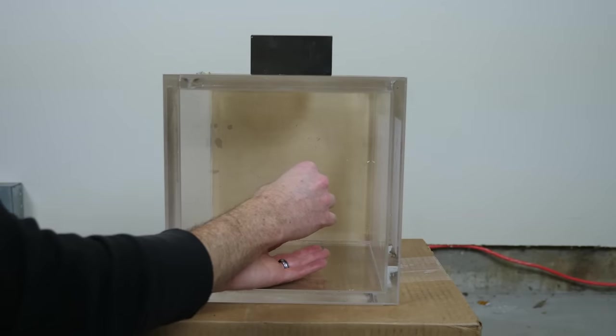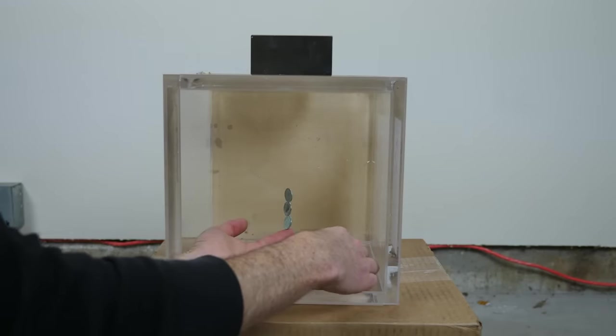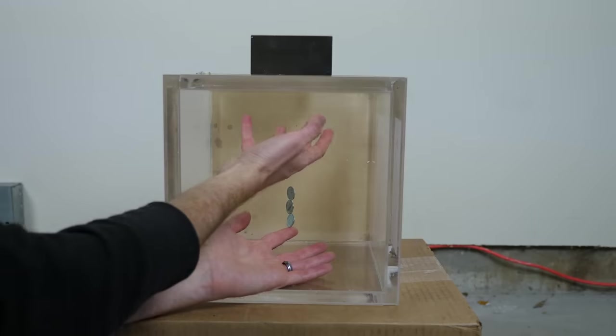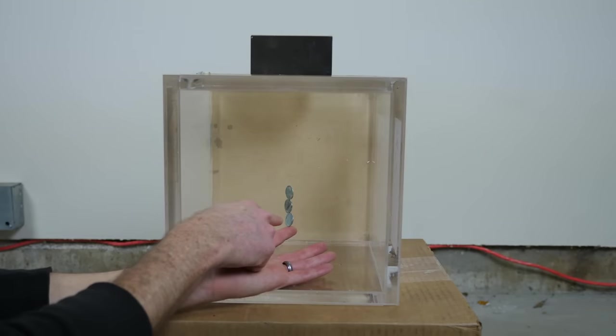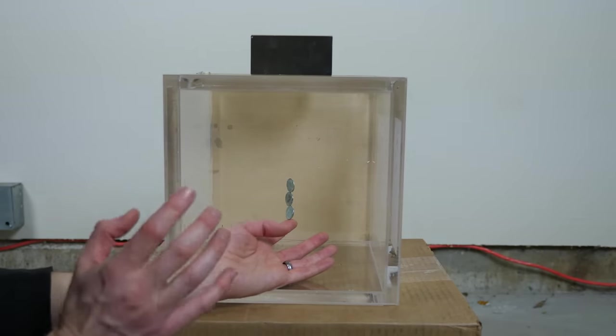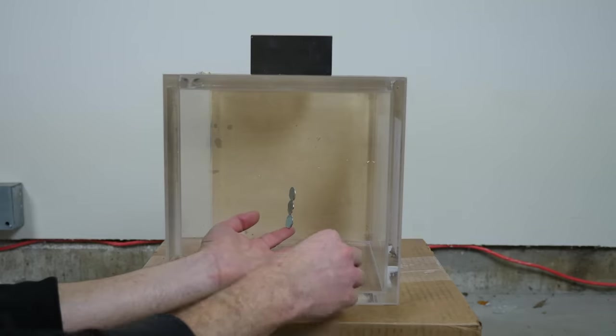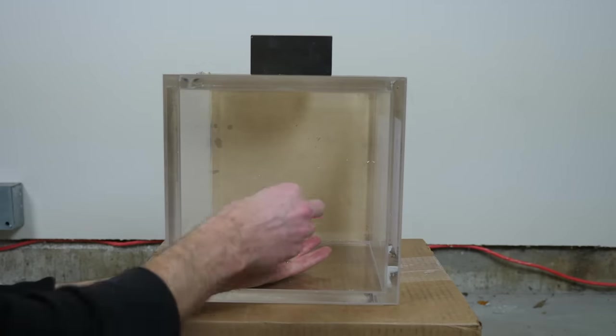So what these pennies are doing here is lining up with the magnetic field lines. So the magnetic field is penetrating the air, and it's inducing a magnetic field inside of the pennies themselves. So the pennies now become their own mini-magnets.